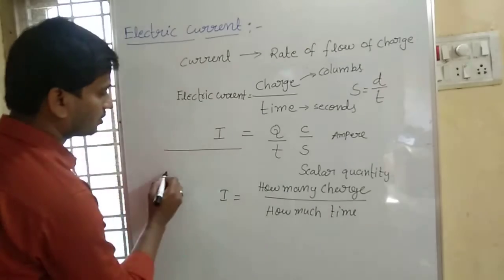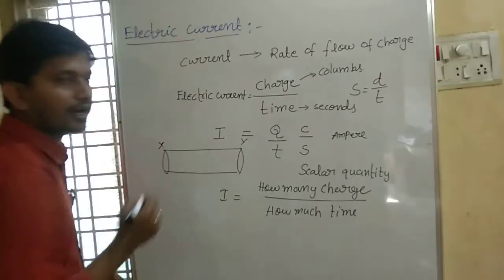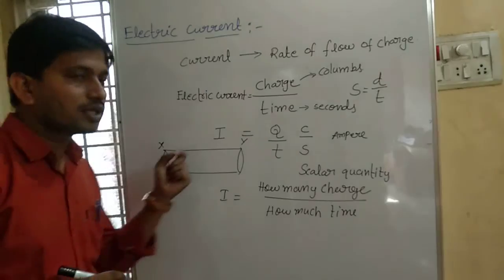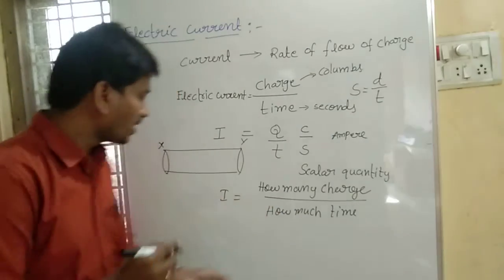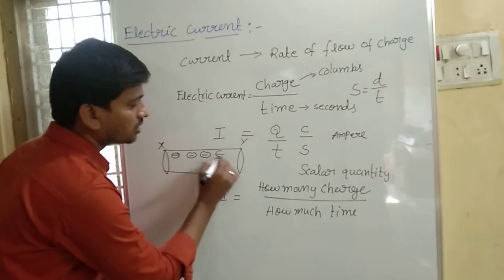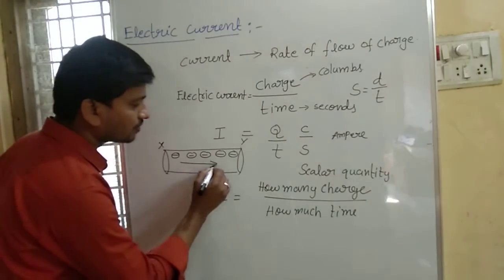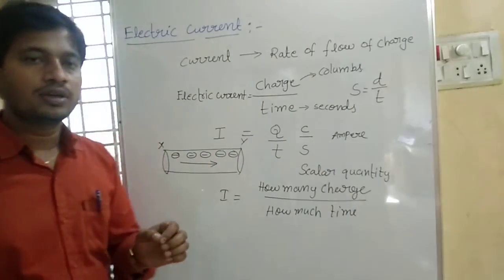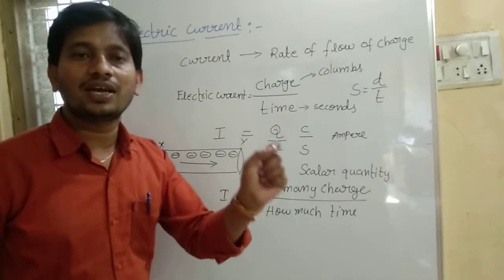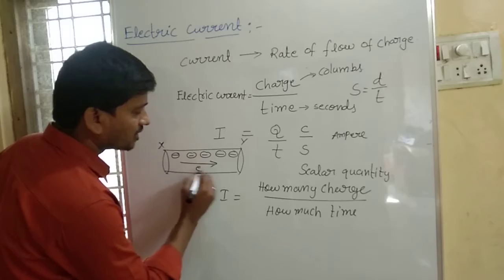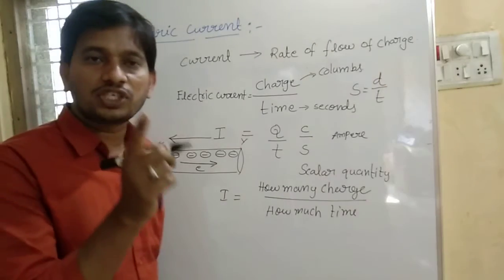Suppose I have a conductor — a wire — which has two points, point X and point Y. Electrons are flowing through this conductor, moving from point X to point Y. It is a convention that when electrons move from X to Y, the electric current flows in the opposite direction — that is, from point Y to point X.